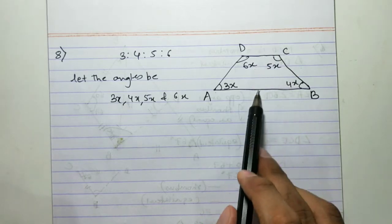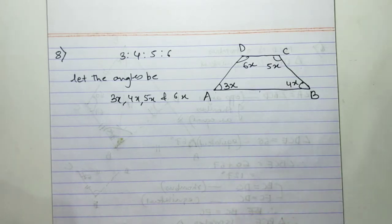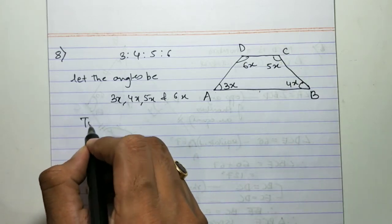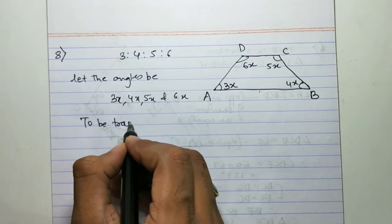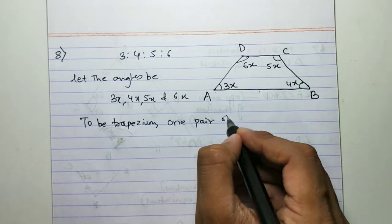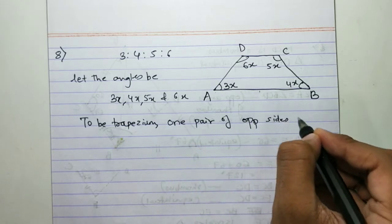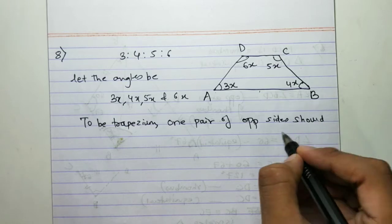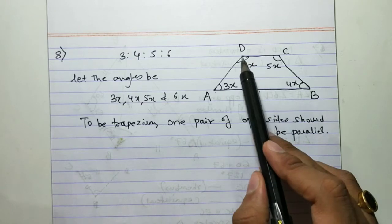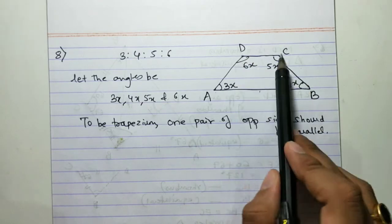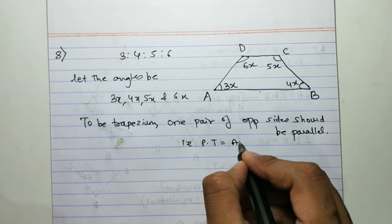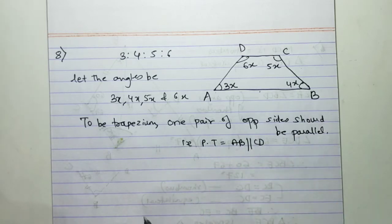To prove that a quadrilateral is a trapezium, one pair of opposite sides must be parallel. So we have to prove that one pair of opposite sides is parallel — that is, prove that AB is parallel to CD.